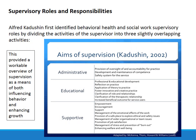Alfred Kadushin first identified behavioral health and social work supervisory roles by dividing the activities of the supervisor into three slightly overlapping activities. First, administrative: the provision of oversight and accountability for practice, development and maintenance of competence, and safety systems for the service. Second, educational: professional and educational development, reflection on practice, application of theory to practice, fostering innovative and creative practice, clarification of role and relationships, clarification of the therapeutic relationship, and increased beneficial outcomes for service users.